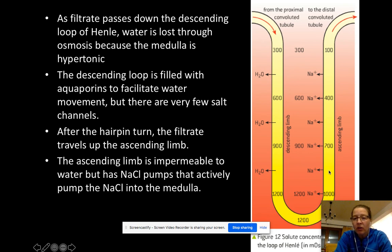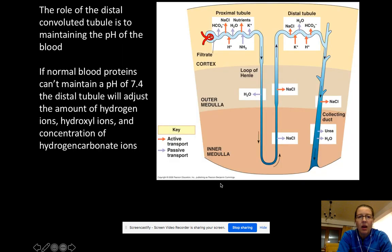When, after it goes around the turn and starts going up the ascending limb, this now is impermeable to water. So you see there's no water coming out. But NaCl gets actively transported out into the medulla all along the way here. So you can see NaCl, and it has to be actively transported out because it's going to be usually less concentrated within the filtrate and pumping all that NaCl out allows for that concentration gradient. So it gets more and more concentrated in NaCl as you move towards the medulla.